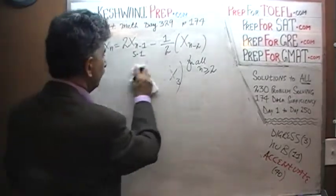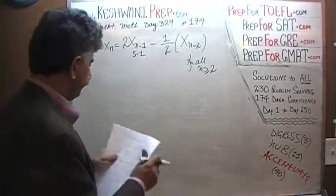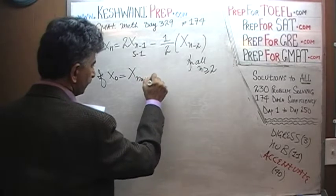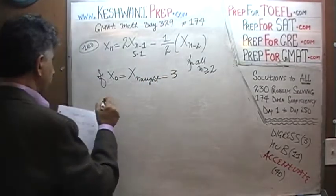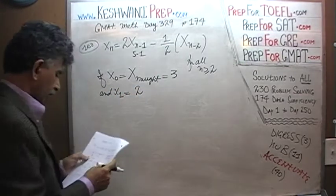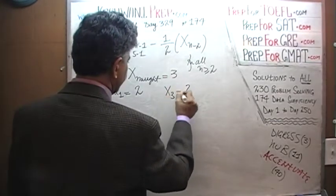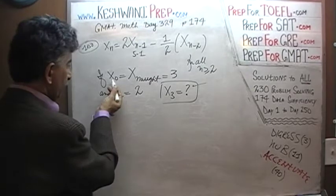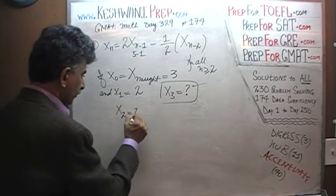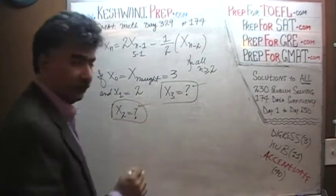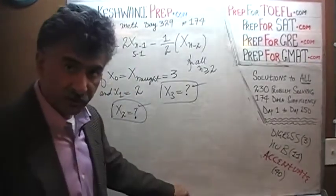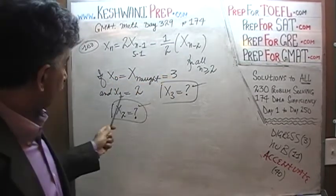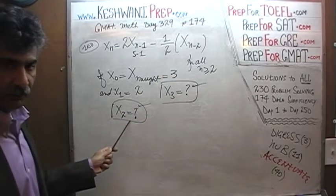The question is: if x_0 equals 3 — x naught equals 3 — and x_1, the first term, equals 2, then how much is x_3? Before we can figure out x_3, we have to first figure out x_2, because we know x_0 and x_1. The third term requires the second and first terms, so we need x_2 first even though they don't ask for it.